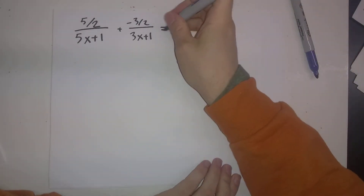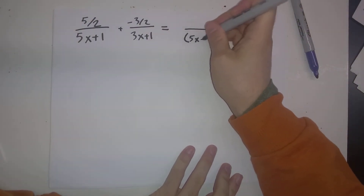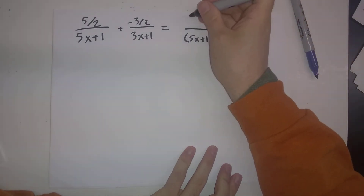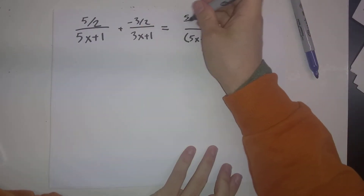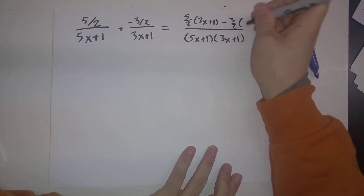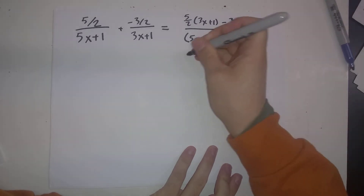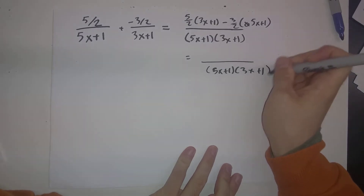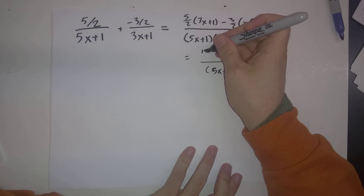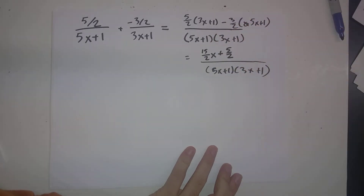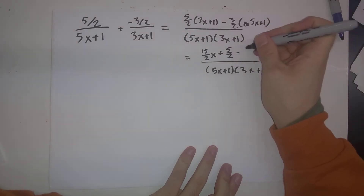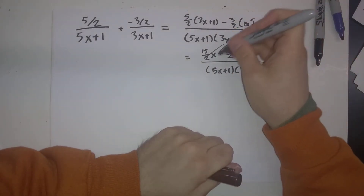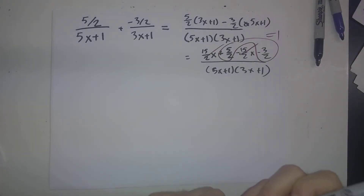Let's check our answer by combining everything back together. We get (5/2)(3x+1) minus (3/2)(5x+1), which expands to 15x/2 + 5/2 − 15x/2 − 3/2. The x terms cancel, and 5/2 − 3/2 = 1. Everything checks out.